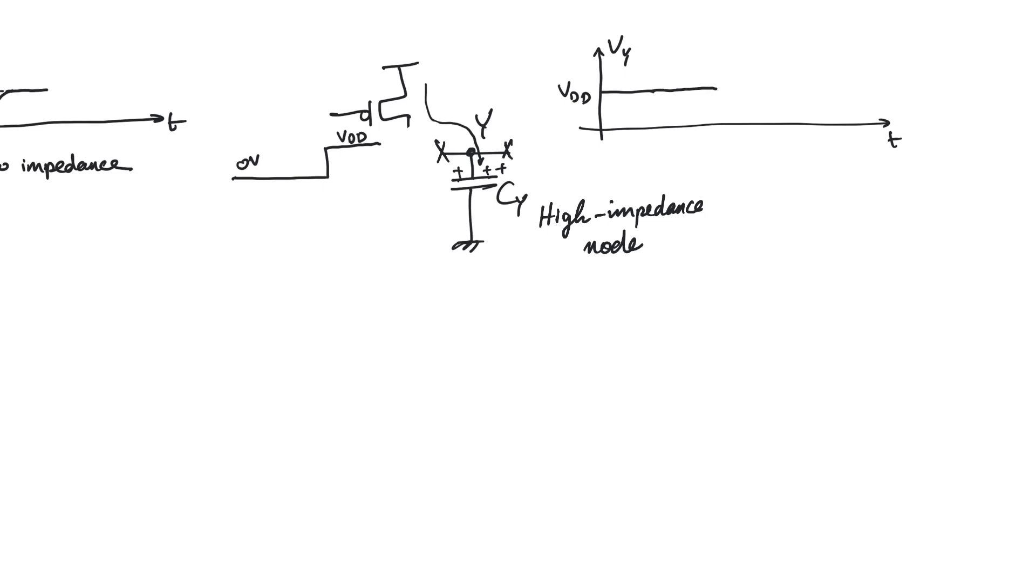So how is node Y different? Let's assume that there is a source of interference or coupling or noise or whatever that takes away some of that charge from node Y. We agreed that this is going to affect the node by decreasing the voltage of the node by a certain value, delta VY, right? So in the low impedance node, when this happened, this caused a VDS drop across the PMOS, which caused the PMOS to provide current in order to restore node X back to VDD. However, node Y is not connected to supply through an on MOSFET. The MOSFET has been cut off. And therefore, any lost charge from node Y cannot be replenished or replaced.